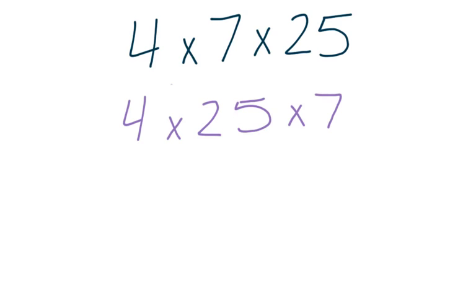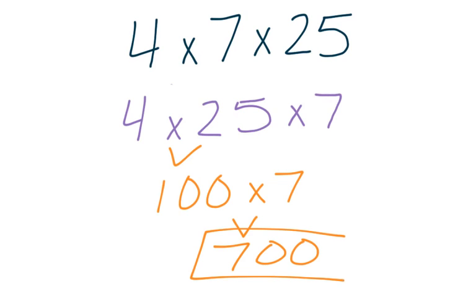Instead of starting with multiplying 4 times 7, I'm going to start with multiplying 4 times 25. That might seem challenging, but think about quarters. A quarter is worth 25 cents, and if you have four of them, you have a dollar, or 100 cents. So 4 times 25 equals 100, and now all we have to do is multiply 100 times 7, which gives us our final answer of 700. Finding those nice peanut butter and jelly numbers to stick together makes it a lot easier.